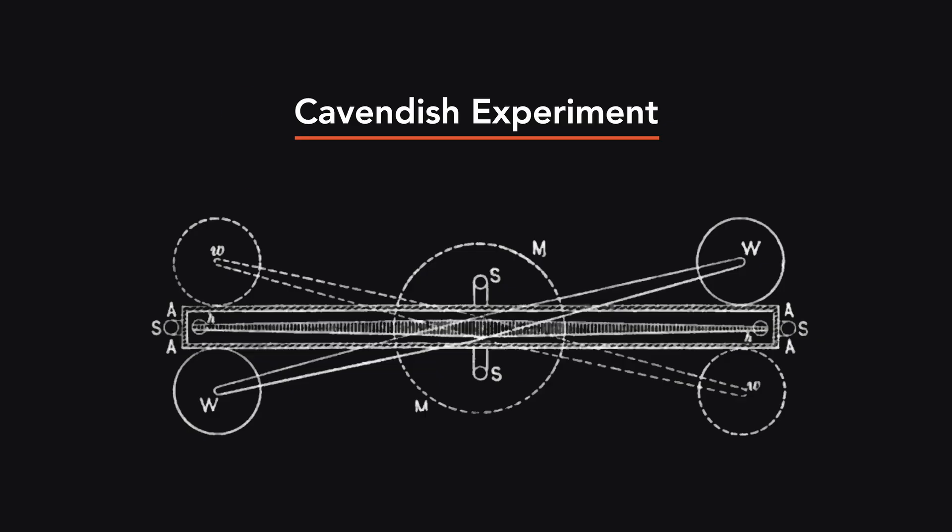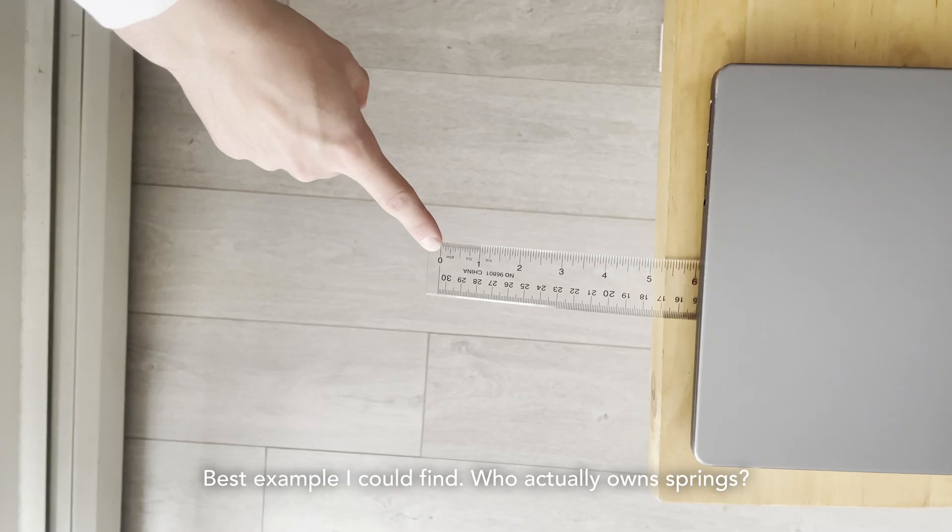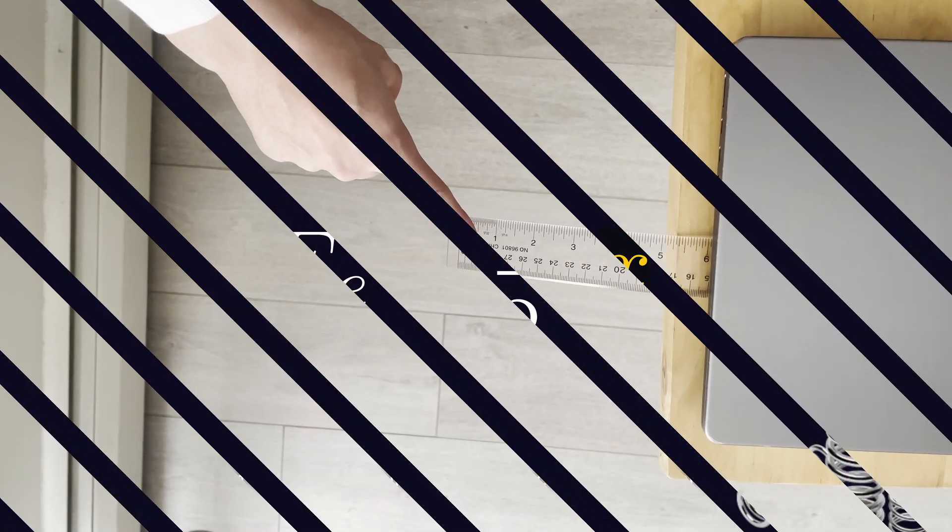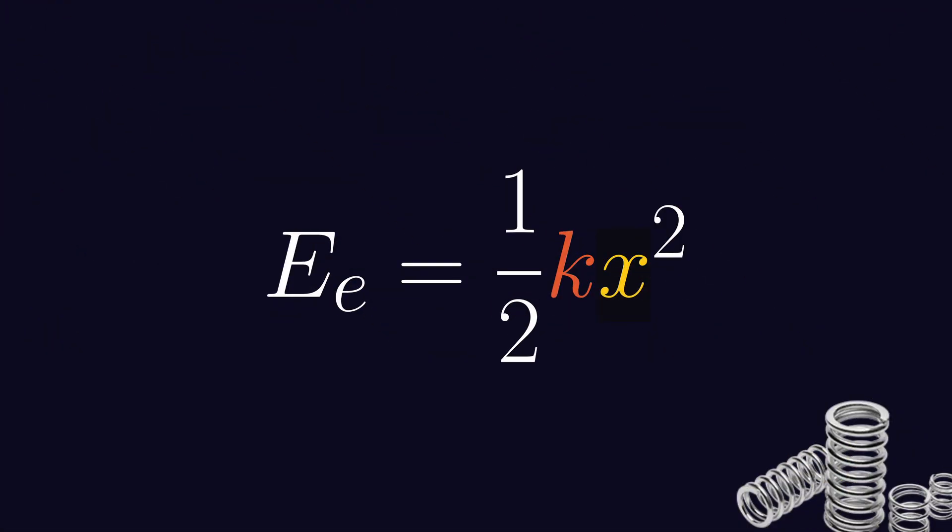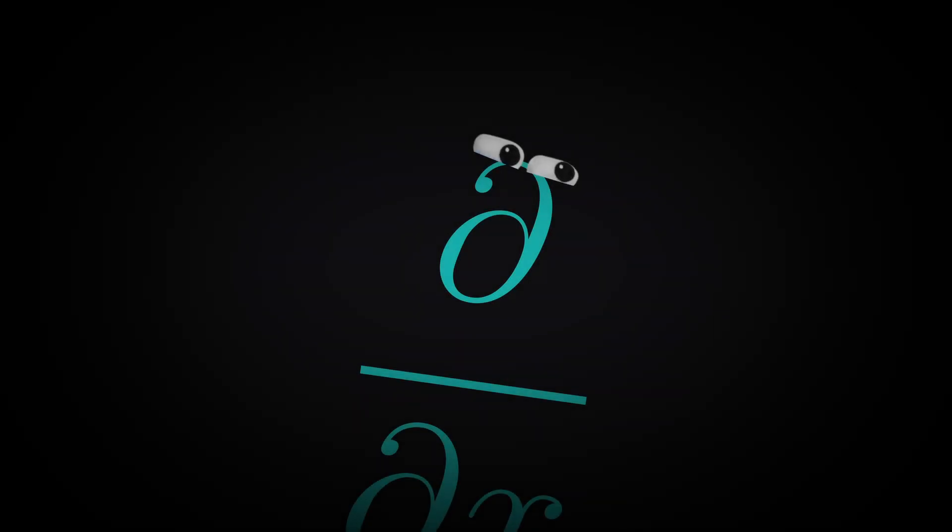Another way of storing potential energy is by deforming an object, for example, compressing a spring. This is elastic potential energy, given by the formula 1 half kx squared, where k is the object's spring constant and x is the distance of deformation. Gee, these two energy formulas look awfully similar. I wonder why that's the case.